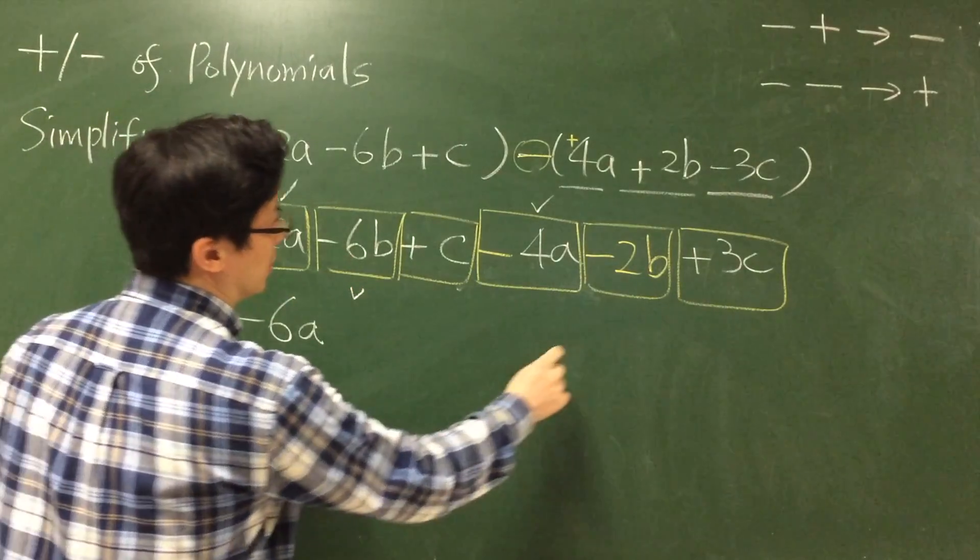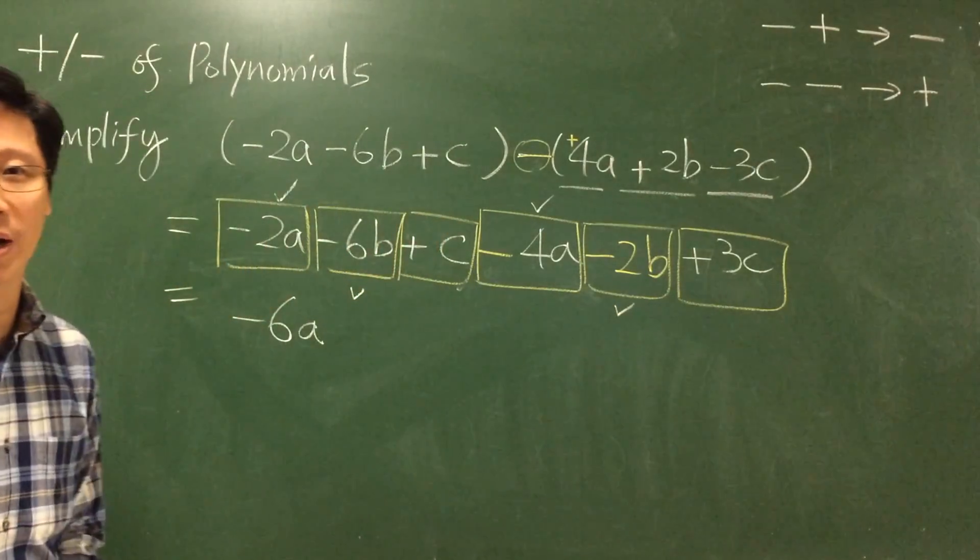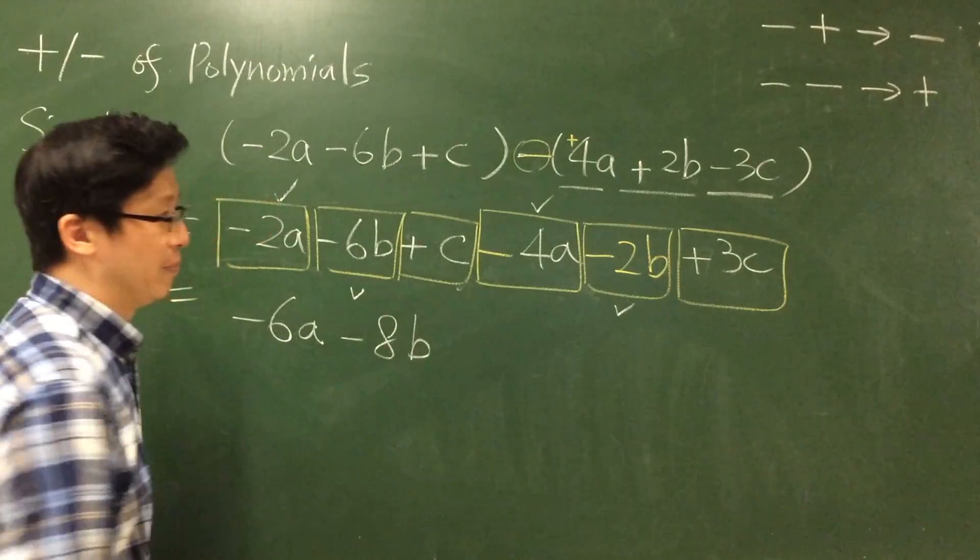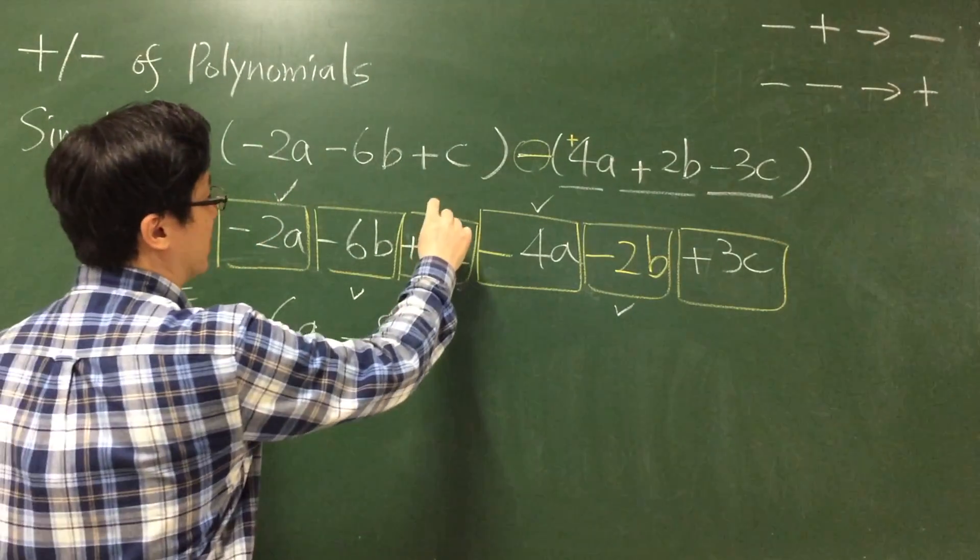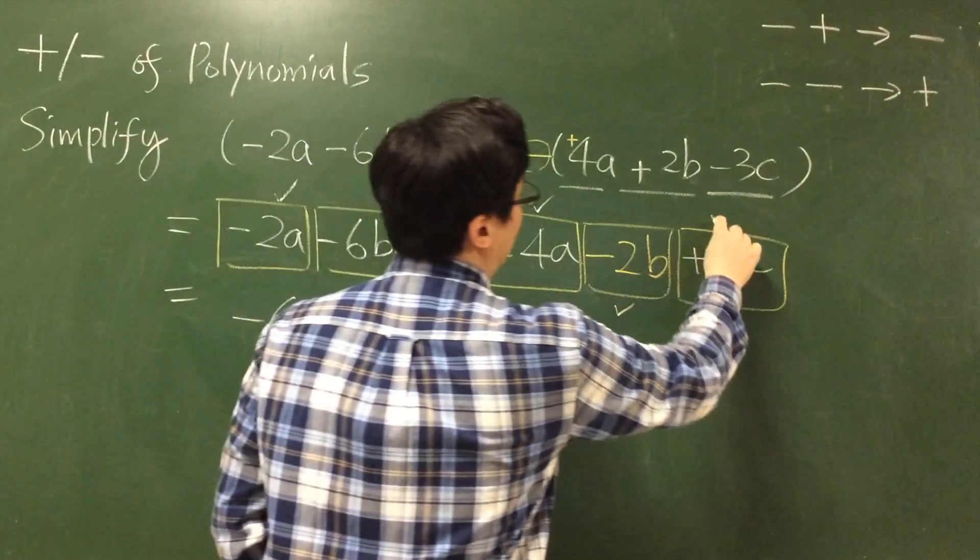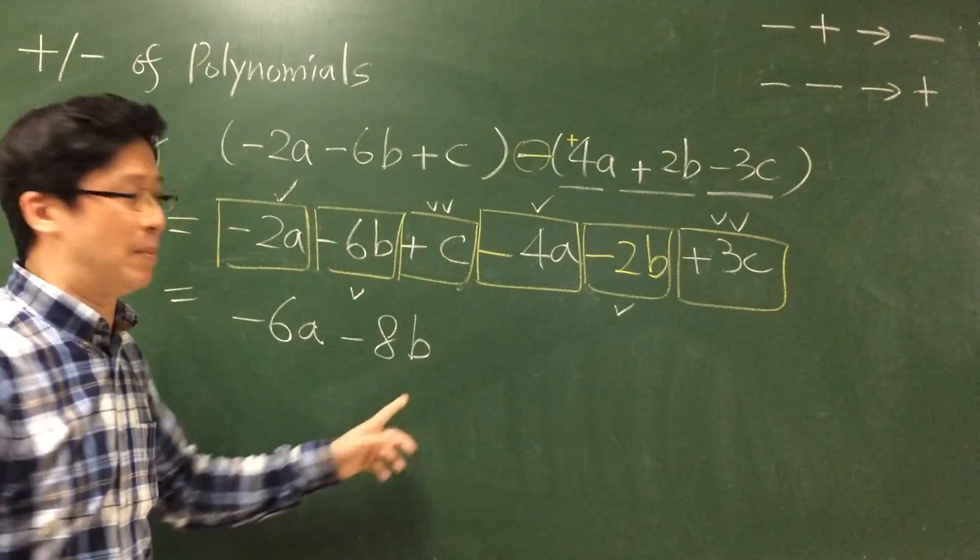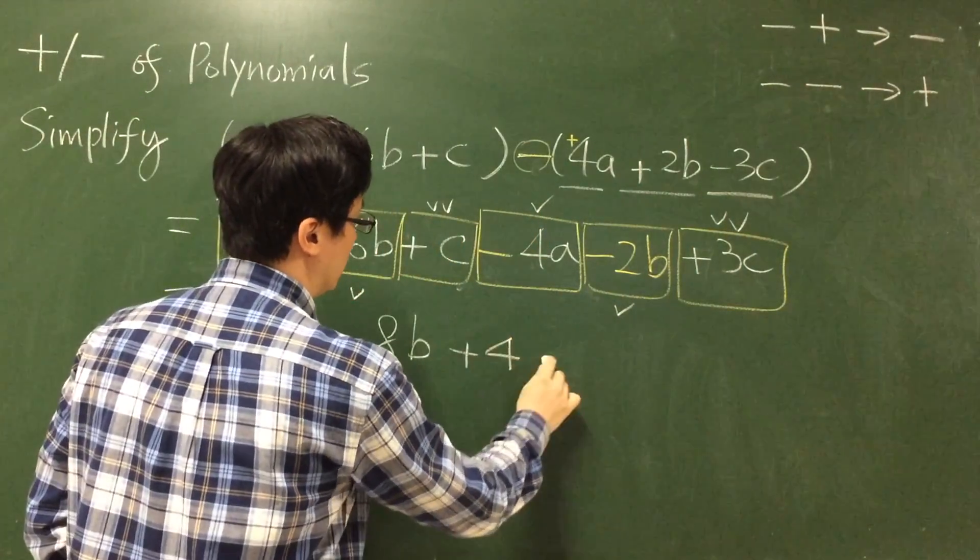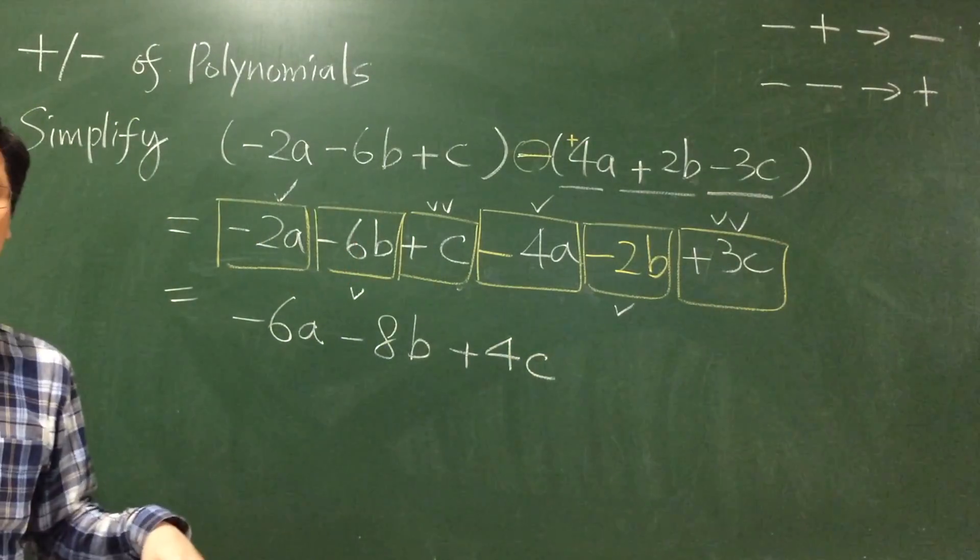What about the b terms? Minus 6b minus 2b, you get minus 8b. And finally plus c plus 3c, that means plus 4c. So this is the final answer.